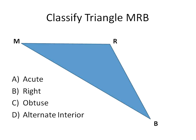And the final kind of triangle — the Mr. B triangle. Is it acute, obtuse, right triangle, or alternate interior angles? This one here is definitely obtuse. The angle R is really obviously larger than 90 degrees, so this would be an obtuse triangle. Not that Mr. B is obtuse, but apparently the triangle is.